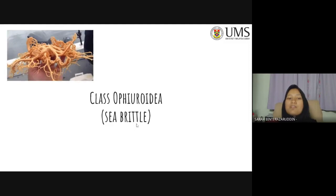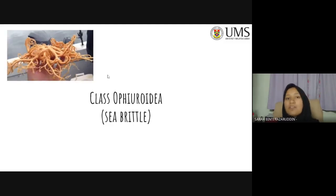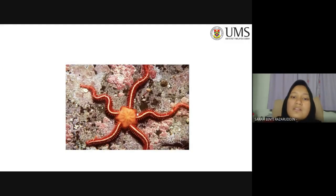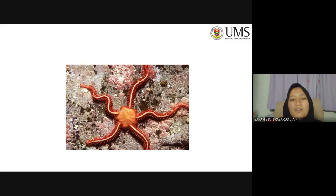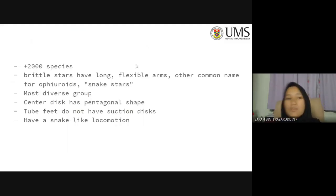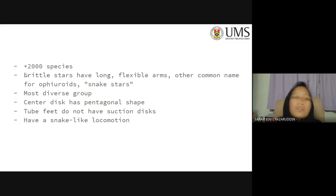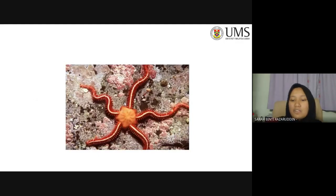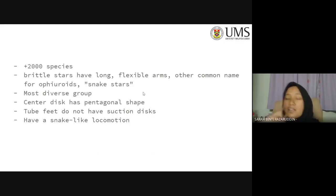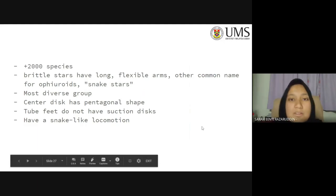Next is class Ophiuroidea — the brittle stars. Unlike starfishes, brittle stars have very long, extended, flexible arms — almost like snake arms — that are distinct from the central body. There are around 2,000-plus species. They are also known as snake stars and are the most diverse group of echinoderms. Their central disk is pentagonal in shape. Unlike starfishes, they don't have suction cups on their tube feet, so they don't stick to walls — instead they use snake-like locomotion.